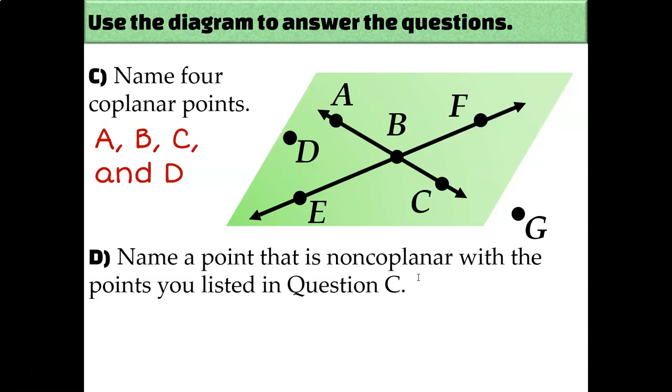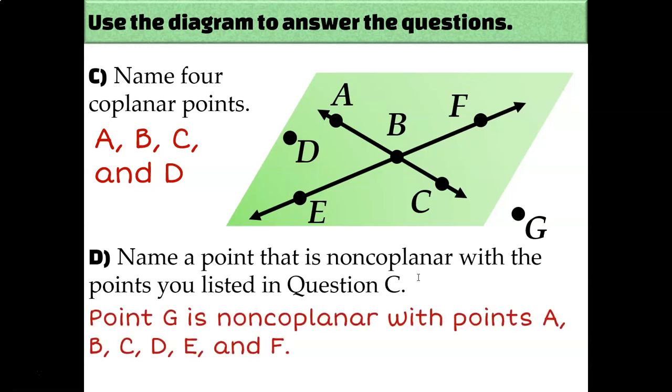So what is a point that is non-coplanar with points A, B, C, and D? Well, G is your only option. G is the only one that is not drawn on that green parallelogram, so you have to assume that G is either floating above that plane or below that plane in a three-dimensional space.